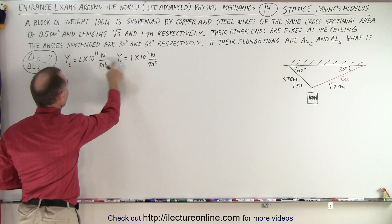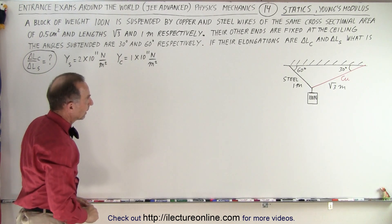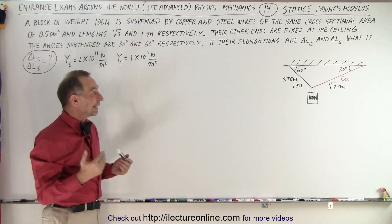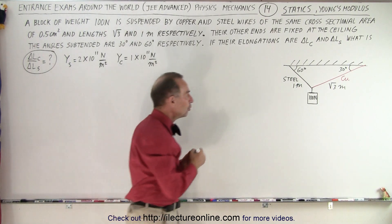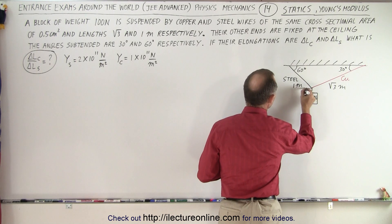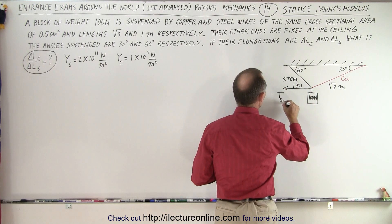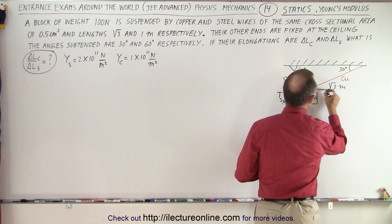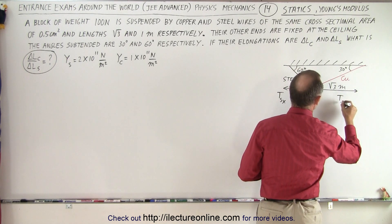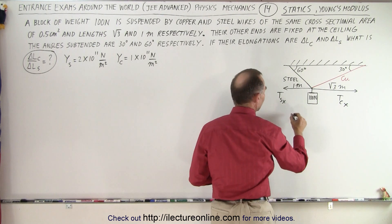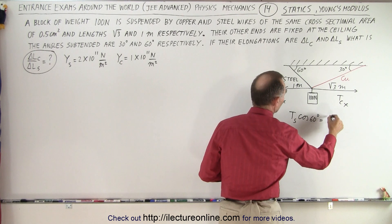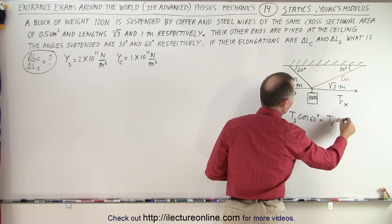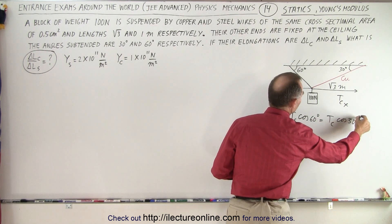They give us the Young's moduli right here. The first thing we should do is relate the tensions of the wires to one another. We can do that by realizing that the tension of the steel in the x-direction must equal the tension of the copper in the x-direction. So we can say that the tension of the steel times the cosine of 60 degrees must equal the tension of the copper times the cosine of 30 degrees.